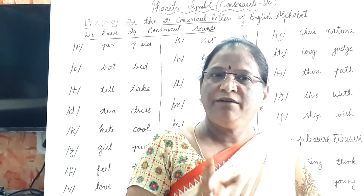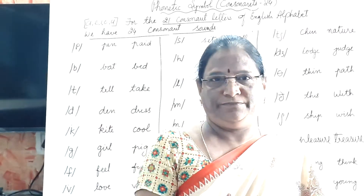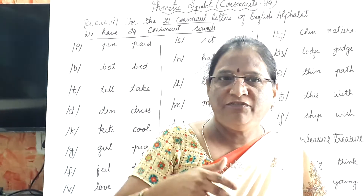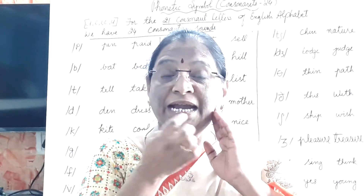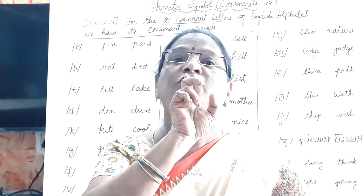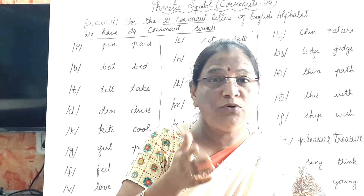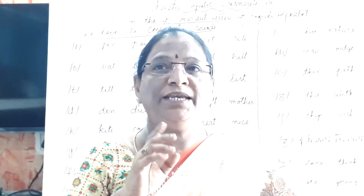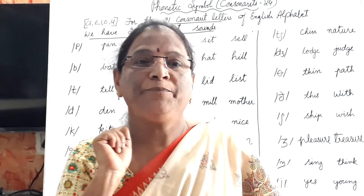Now, what is a consonant? Consonants have friction when they are spoken, mostly using the position of the tongue against the lips, teeth, and roof of the mouth.